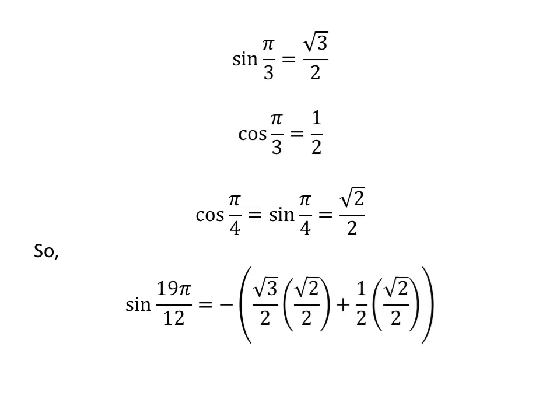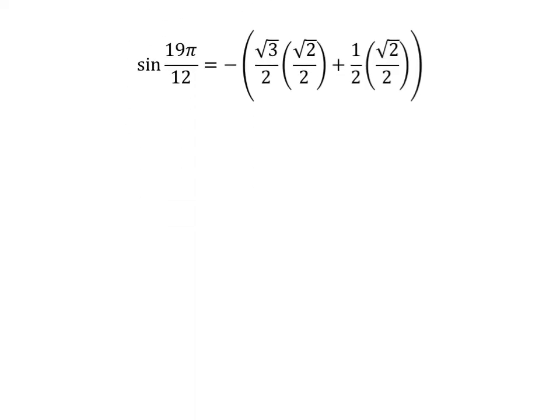We get sin of 19 times pi upon 12 is equal to minus of square root of 3 upon 2 times square root of 2 upon 2 plus half times square root of 2 upon 2. Straight multiplication gives us sin of 19 times pi upon 12 is equal to minus of square root of 6 upon 4 plus square root of 2 upon 4.